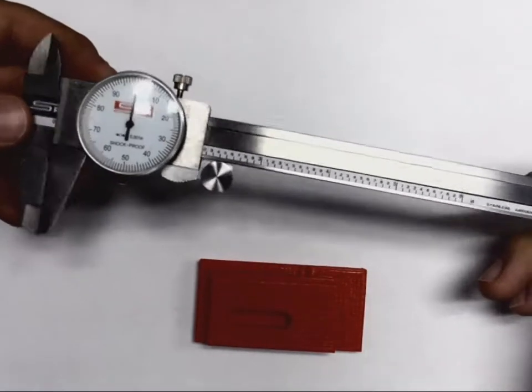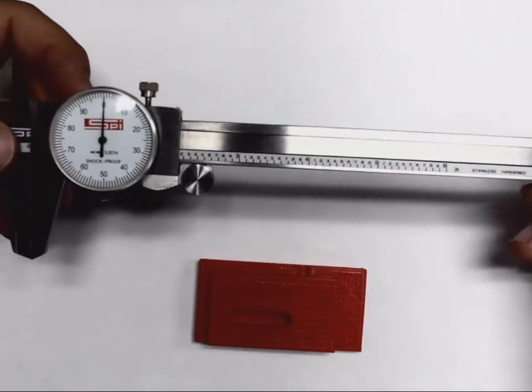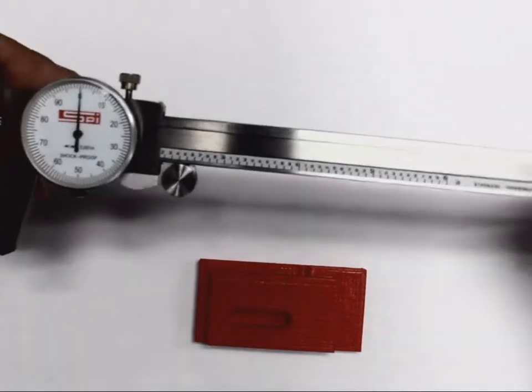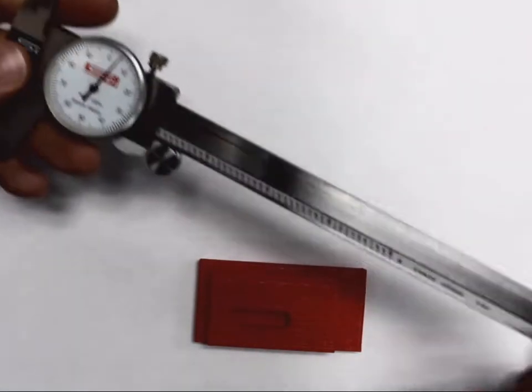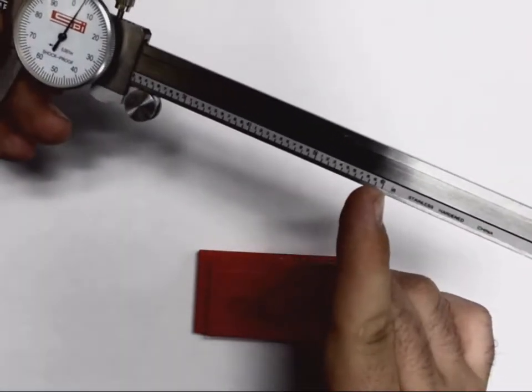As far as anatomy of the dial caliper, a few terms here that you'll need to know. This is an inch dial caliper. Your inch dial caliper will measure slightly more than six inches.